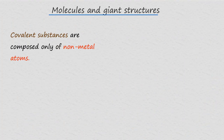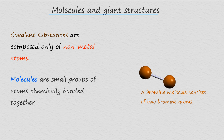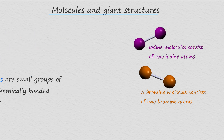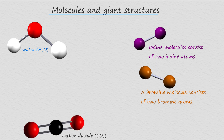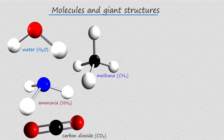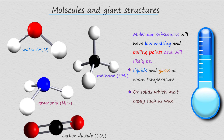Most of the covalent substances that you will have met so far have been small molecular structures — that is, structures composed of only a few atoms bonded together. For example, water, carbon dioxide, methane and ammonia are all covalent substances with small molecular structures. Substances with these molecular structures will have low melting and boiling points and are likely to be liquids or gases at room temperature.